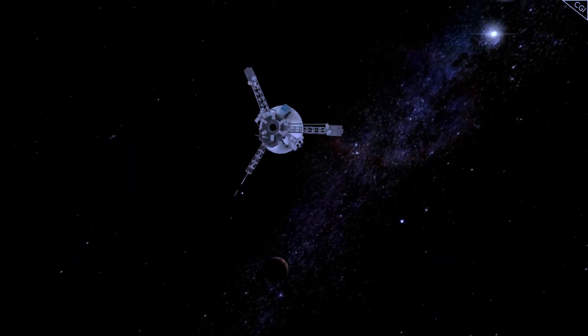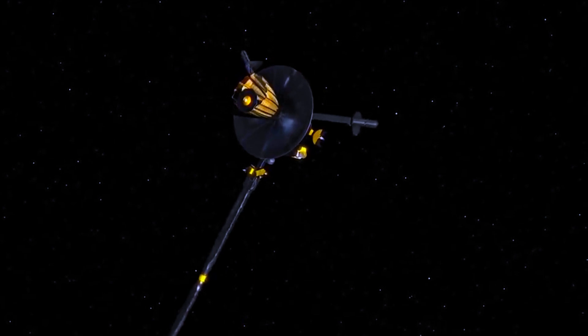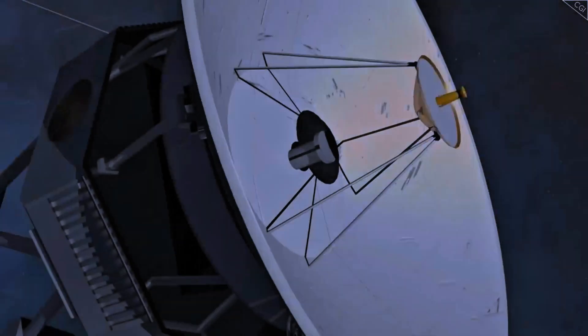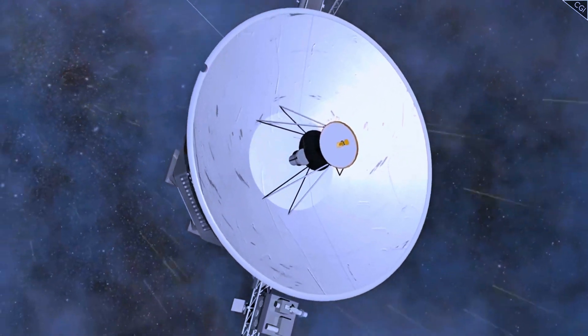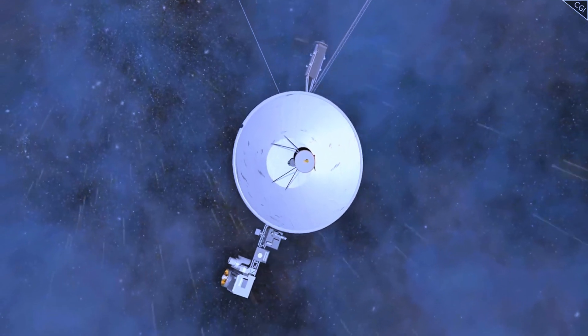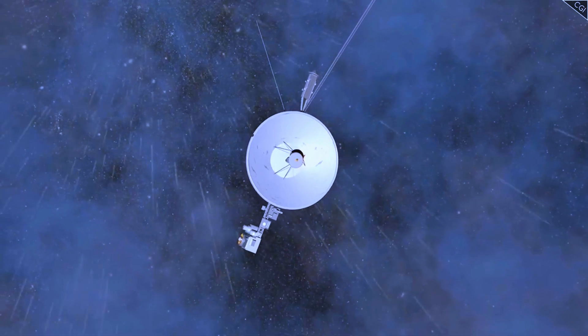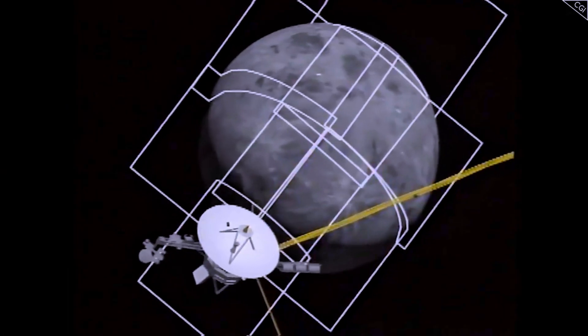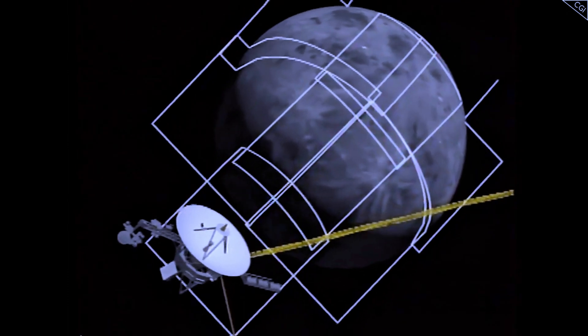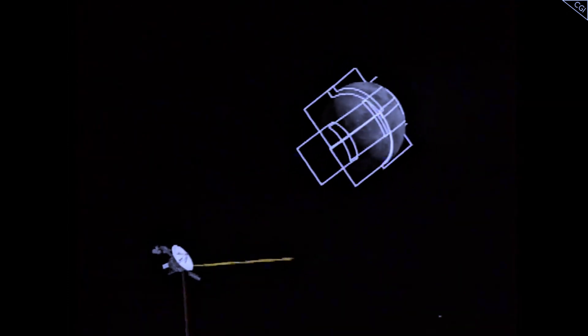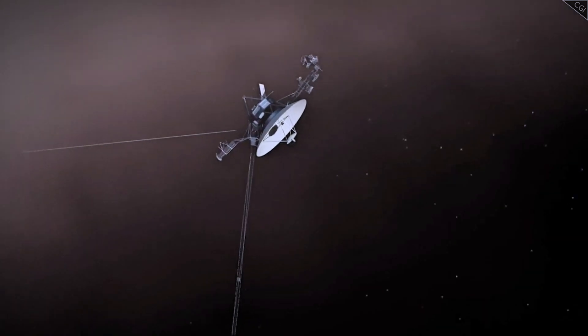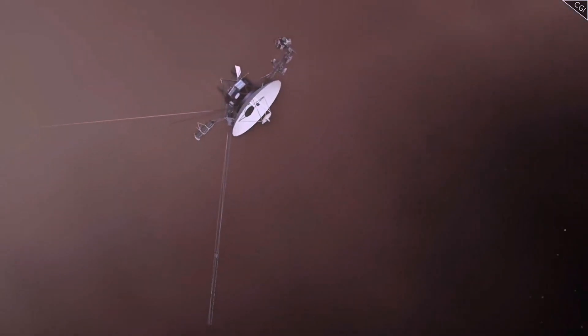In recent times, Voyager 1 faced a challenge when it stopped sending readable data in November 2023. Engineers at NASA's Jet Propulsion Laboratory discovered an issue with the flight data subsystem, responsible for packaging the spacecraft's data. A faulty memory chip rendered the data unusable. Unable to repair the chip, the team devised a plan to relocate the affected code to different parts of the subsystem's memory, ensuring the spacecraft could continue its mission.